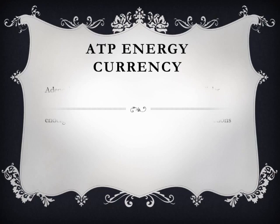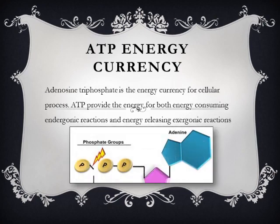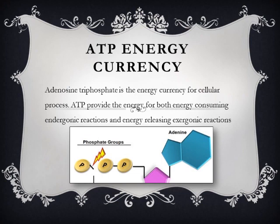The next slide is about ATP as the energy currency of the cell. ATP is the energy currency for cellular processes. ATP provides energy for both endergonic reactions, where energy is consumed, and exergonic reactions, where energy is released. Below is a diagram of ATP structure showing three phosphate groups. The bond between the second and third phosphate groups is highly energetic, and when it breaks down it releases a large amount of energy. ATP molecules are highly unstable, and whenever the cell requires energy, ATP breaks down.